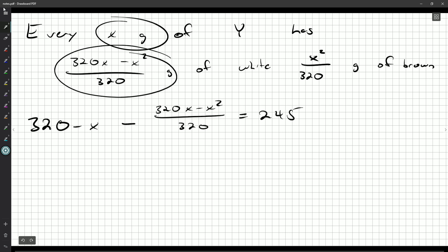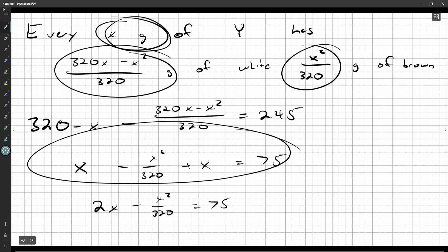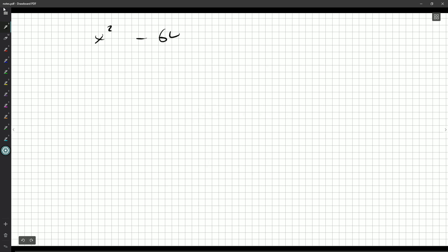But we know how much white that's going to be. That's going to be 245. This should be enough to solve for X. Alternatively, if you don't want to use this equation here, you could say, how much brown did we have? We had X. This is how much we remove when we take away X grams of mixture Y. And then they added X grams back in, and that gave us a total of 75. Either equation is fine. Actually, I think this one might be the cleaner one to use. So 2X minus X squared over 320 is 75. Let's multiply by 320 on both sides. So 640X minus X squared, and we get 24,000.